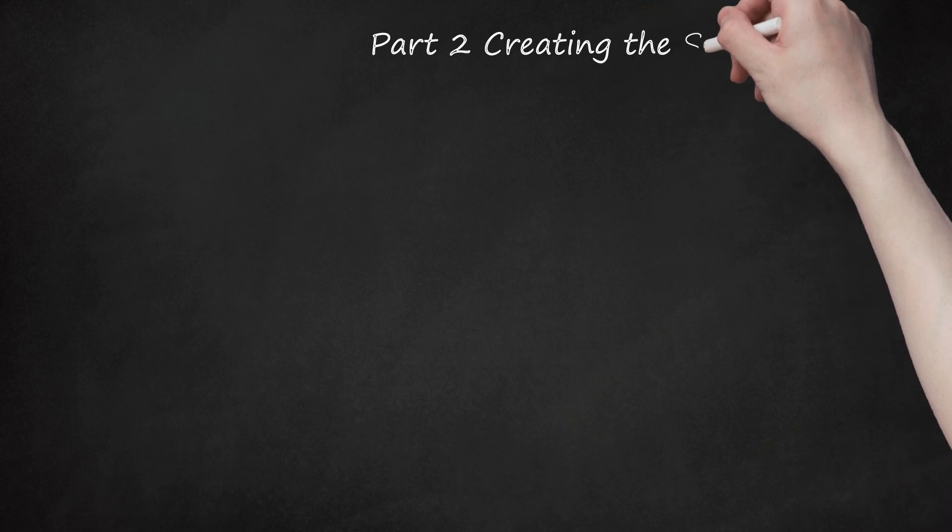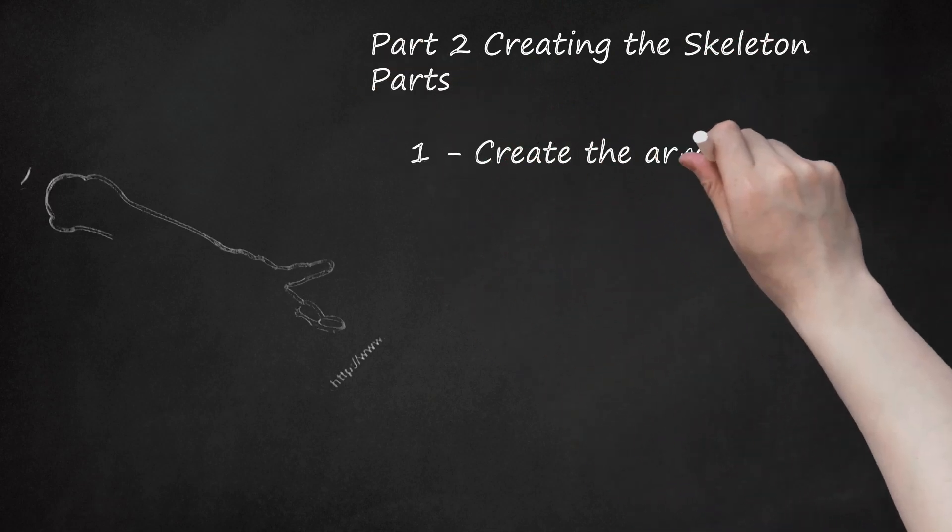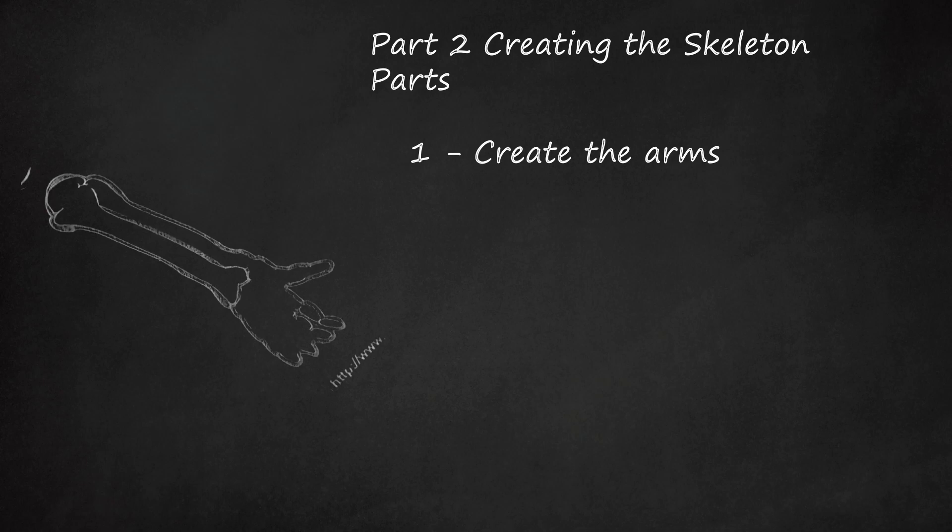Part 2: Creating the Skeleton Parts. Step 1: Create the Arms. The arms have two parts, an upper and a lower arm. Use one piece of paper or cardstock for each part of the arm. Trace the printed skeleton picture or use the picture as a guide to draw the bones on paper. For a basic skeleton, draw out two cartoon bone shapes. Use one for the upper arm and one, with a hand on it, for the lower arm.